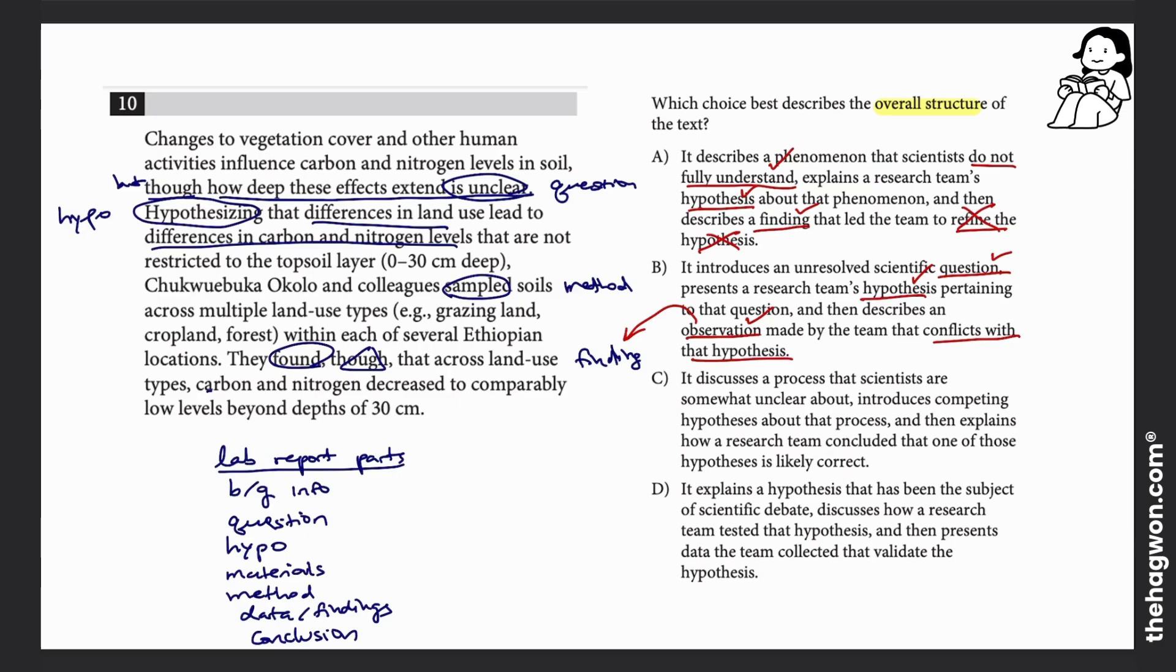Answer choice C says it discusses a process that scientists are unclear about. Okay, that's my question. And then it says introduces competing hypotheses. Competing hypotheses means that two hypotheses that are working against each other or fighting each other. Well I didn't have that. I saw one hypothesis in my passage. I didn't see two, and I definitely didn't see two hypotheses that disagree with each other. So for that reason, C is incorrect.